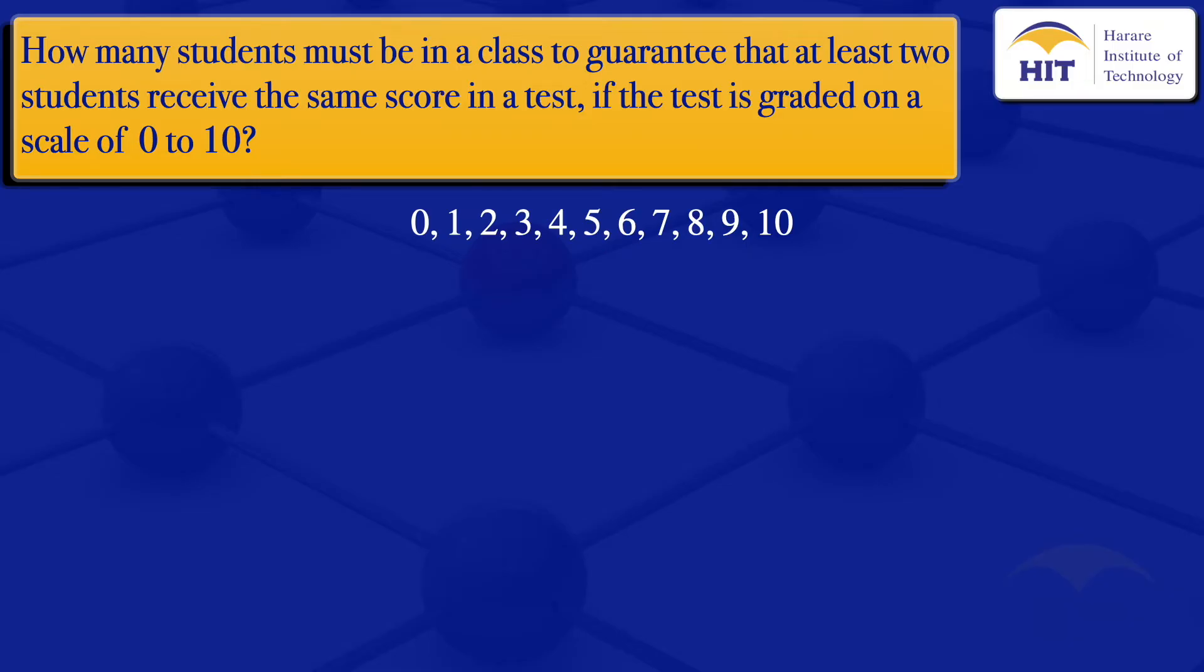So we have 11 categories. I can number them, we have k equals 11. And when we have k categories and we want to find a number n, the n is not given. That is what we want to find.